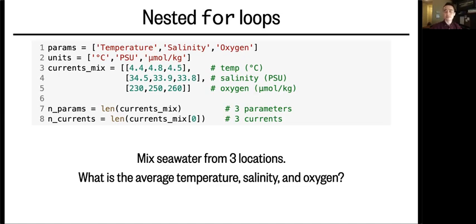So first we've recorded the three parameters and their three units in these two lists, and then we've stored the data in this list of lists called currents_mix, where the first sublist stores the three temperatures of the three currents, the second sublist stores the three salinities, and the third stores the three oxygen concentrations.